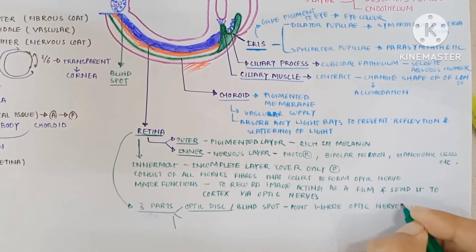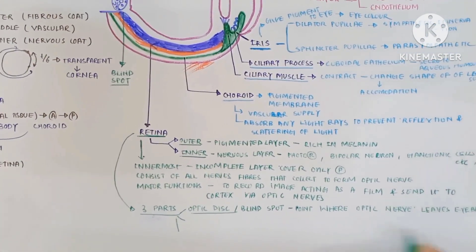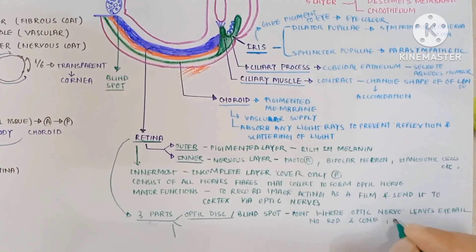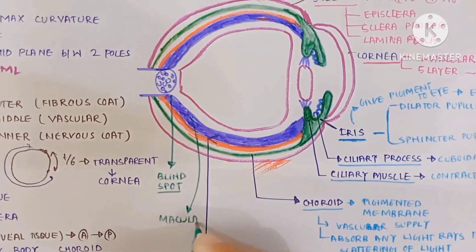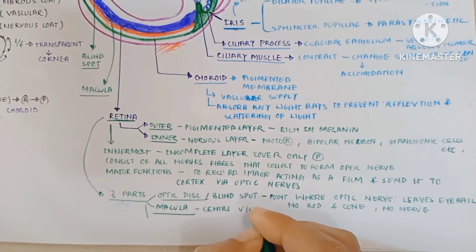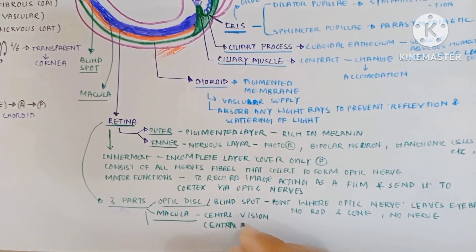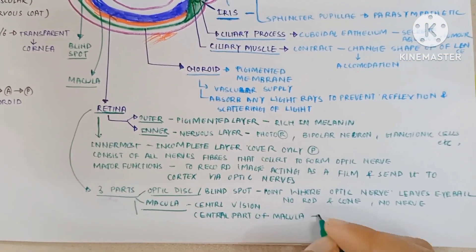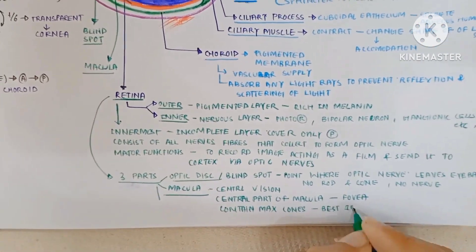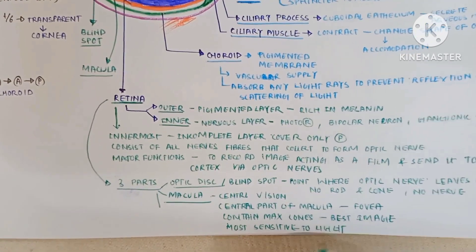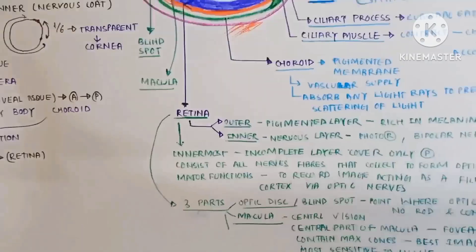The blind spot is the point where the optic nerve leaves the eyeball. There are no rods, no cones, and no nerves at all. The second is the macula, which is for central vision. The central part of the macula is called the fovea centralis. It contains maximum cones and the best images form at this place, most sensitive to light.